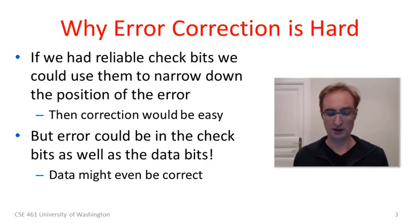Okay, well to get the ball rolling here, let me remind you why error correction is hard. Now if we had reliable check bits that you could send to go with the data bits, everything would be much easier. You could send that reliable information and use them to describe the structure of the message and narrow down where the error was in the data. But of course there can be problems in all of the check bits. In fact the error could be in the check bits as well as the data bits.